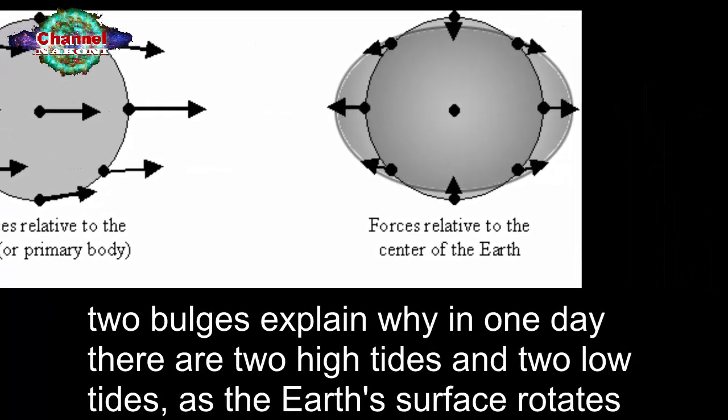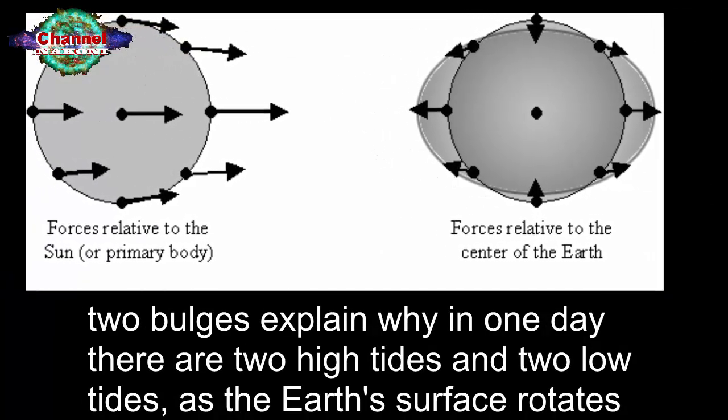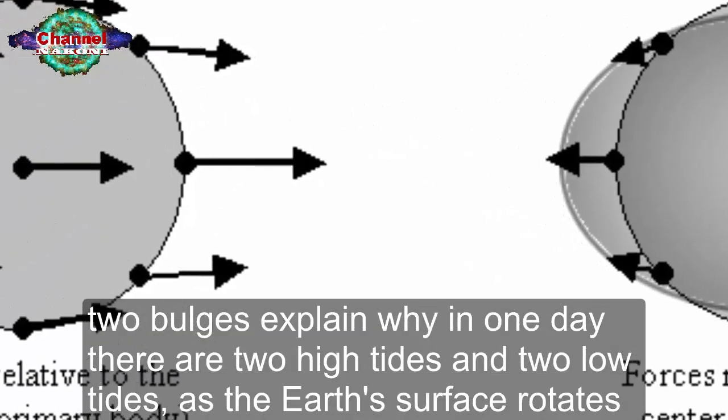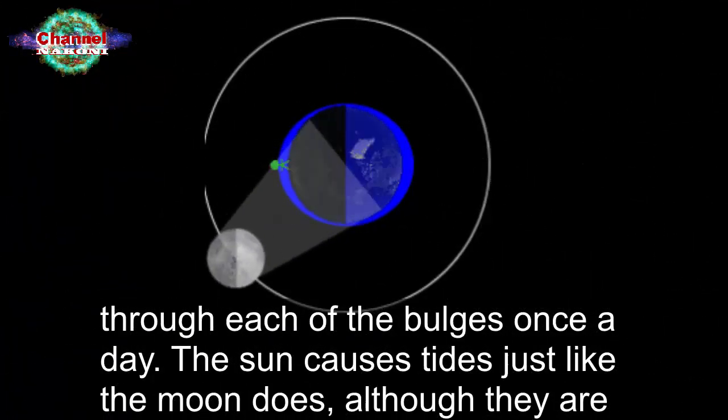These two bulges explain why in one day there are two high tides and two low tides, as the earth's surface rotates through each of the bulges once a day.